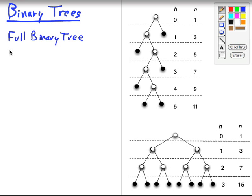One fact about full binary trees is that the number of leaves is the number of internal nodes plus 1. For example, here we have six leaves and five internal nodes. We've got eight leaves and seven internal nodes.